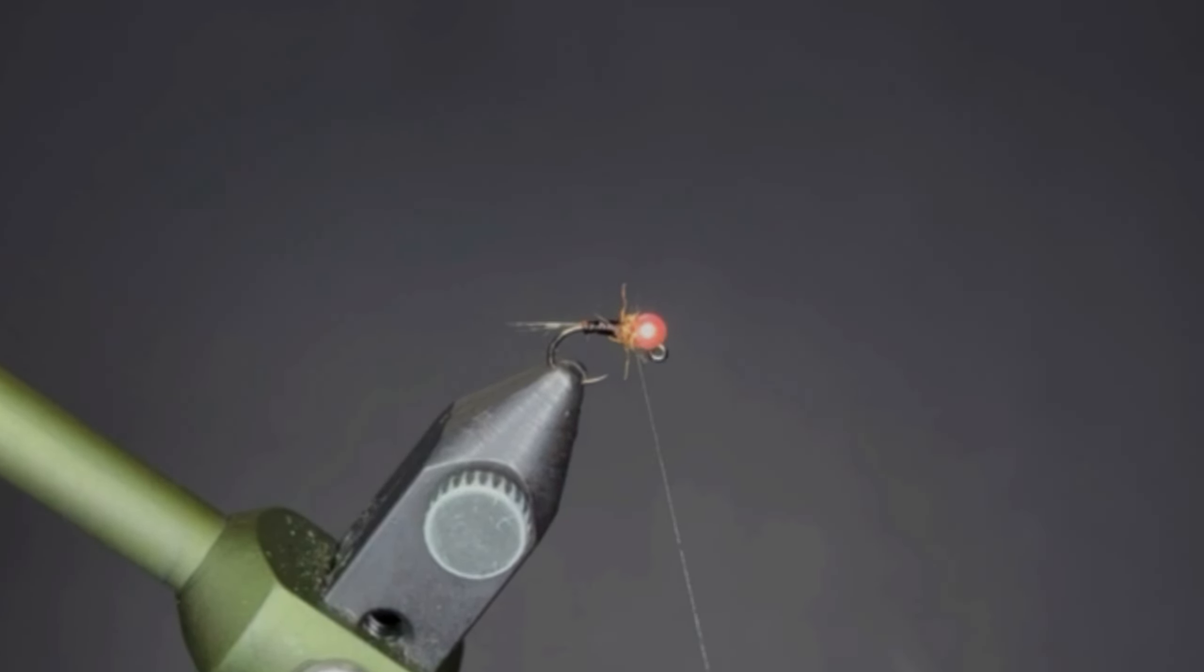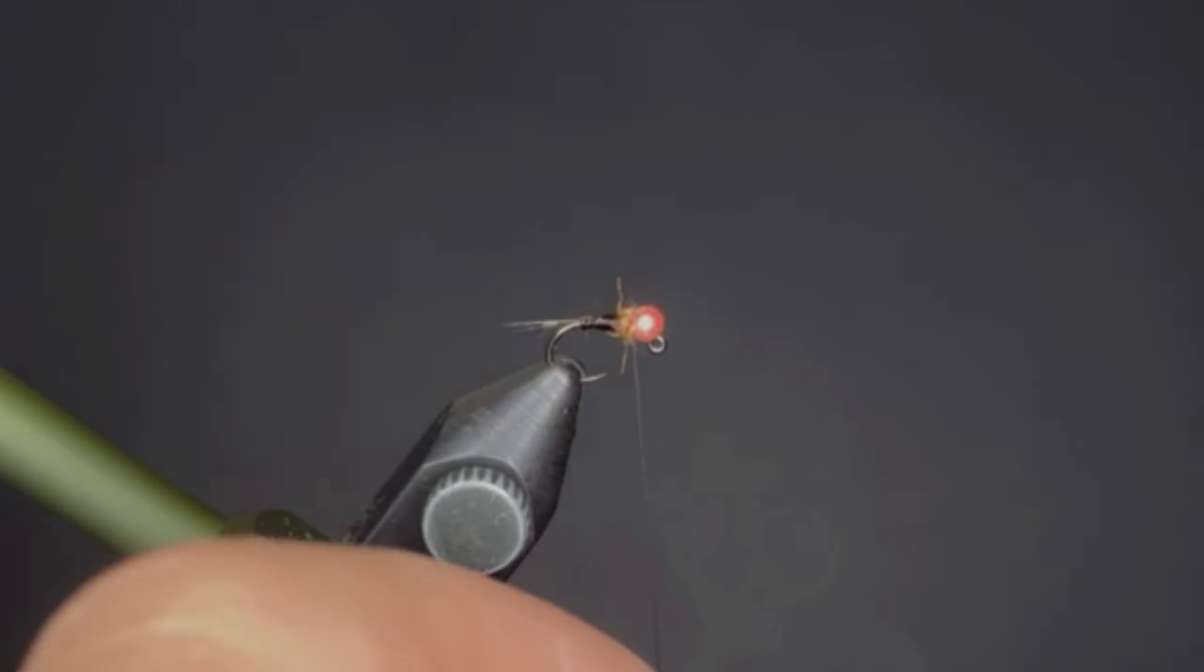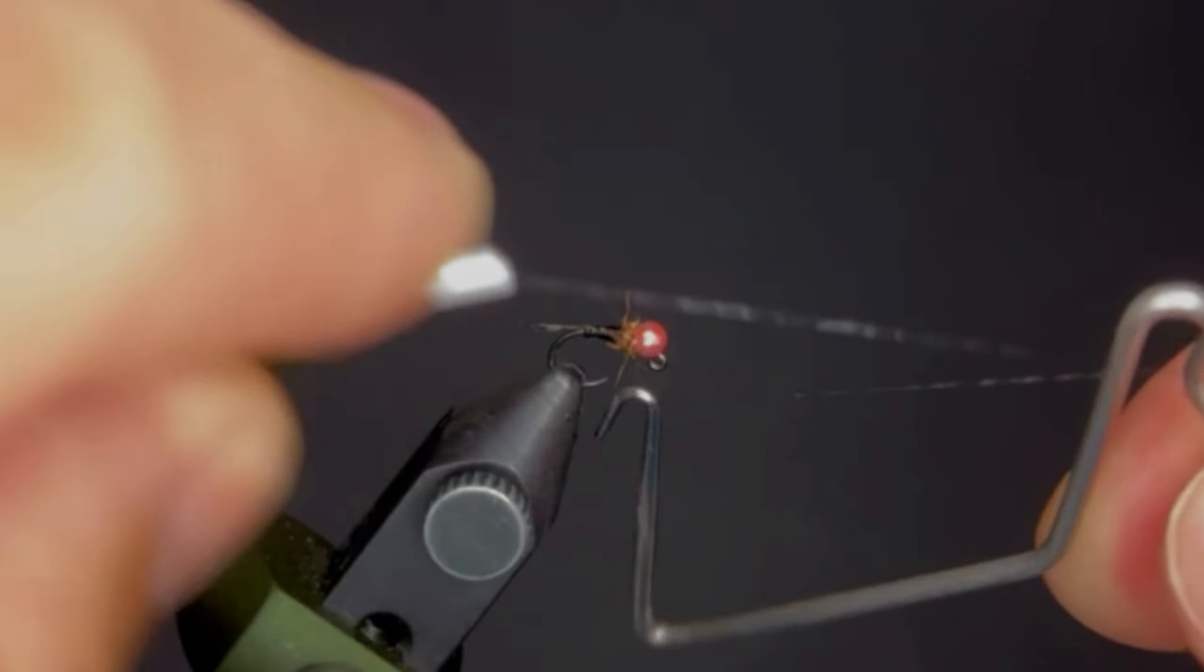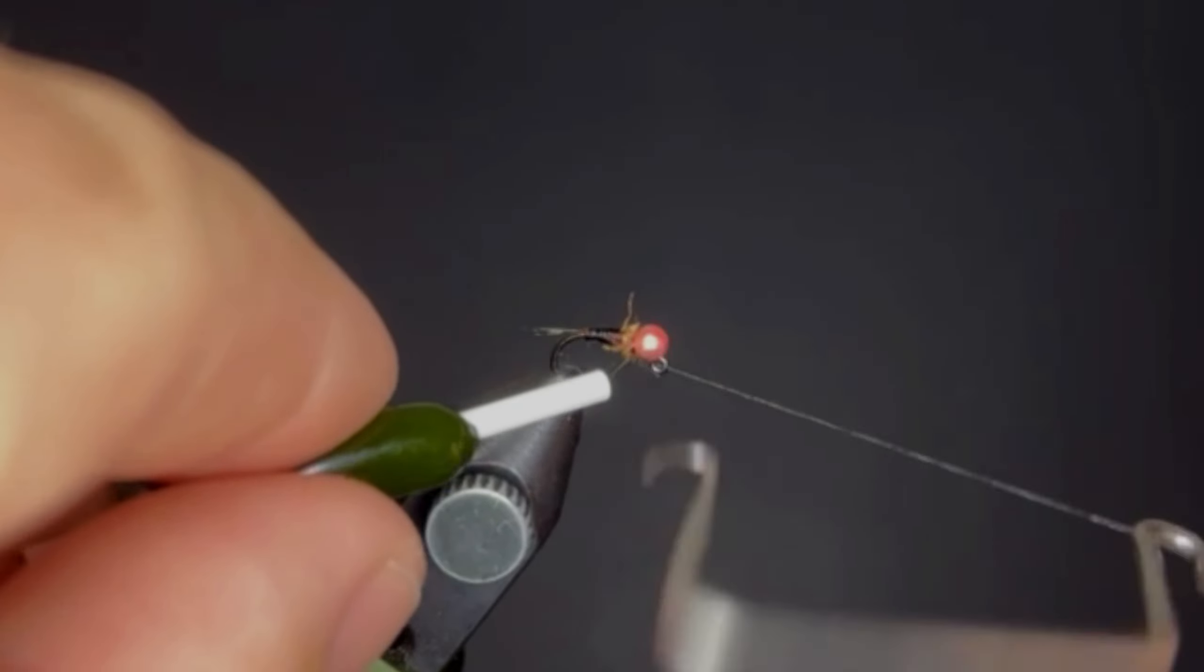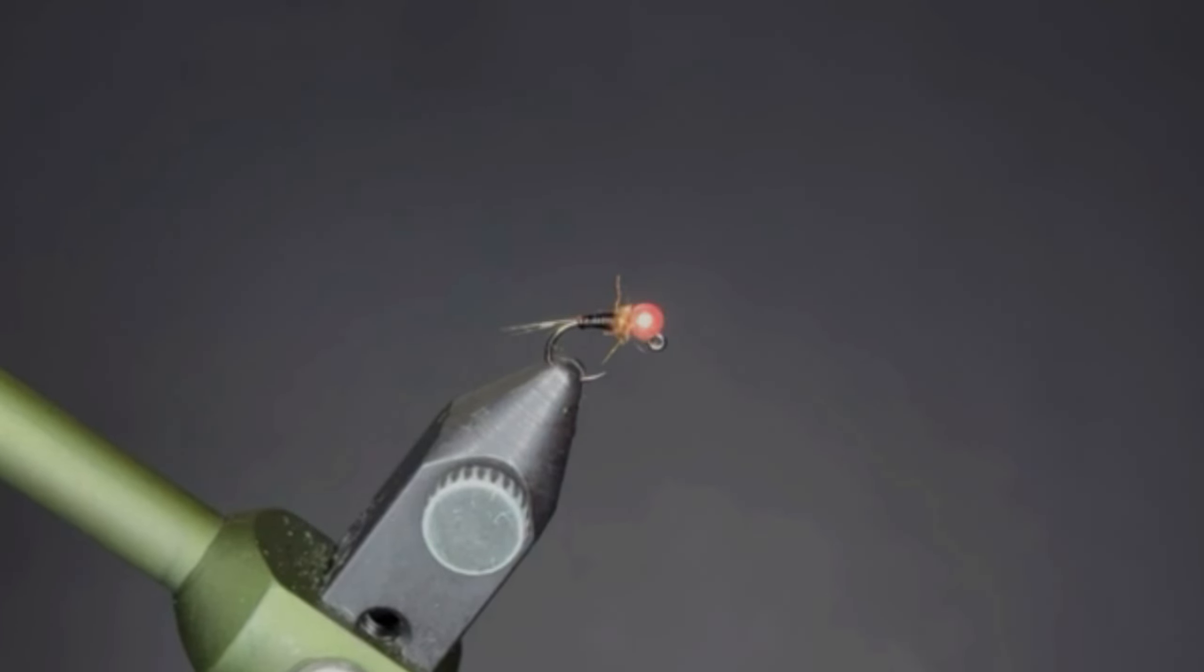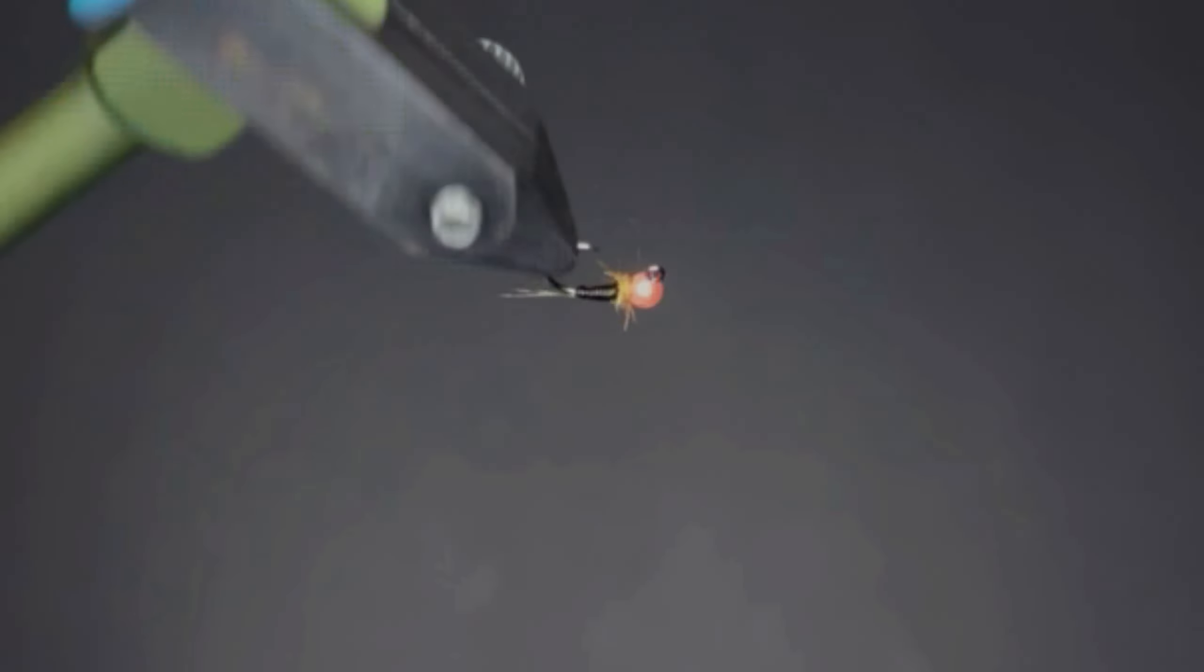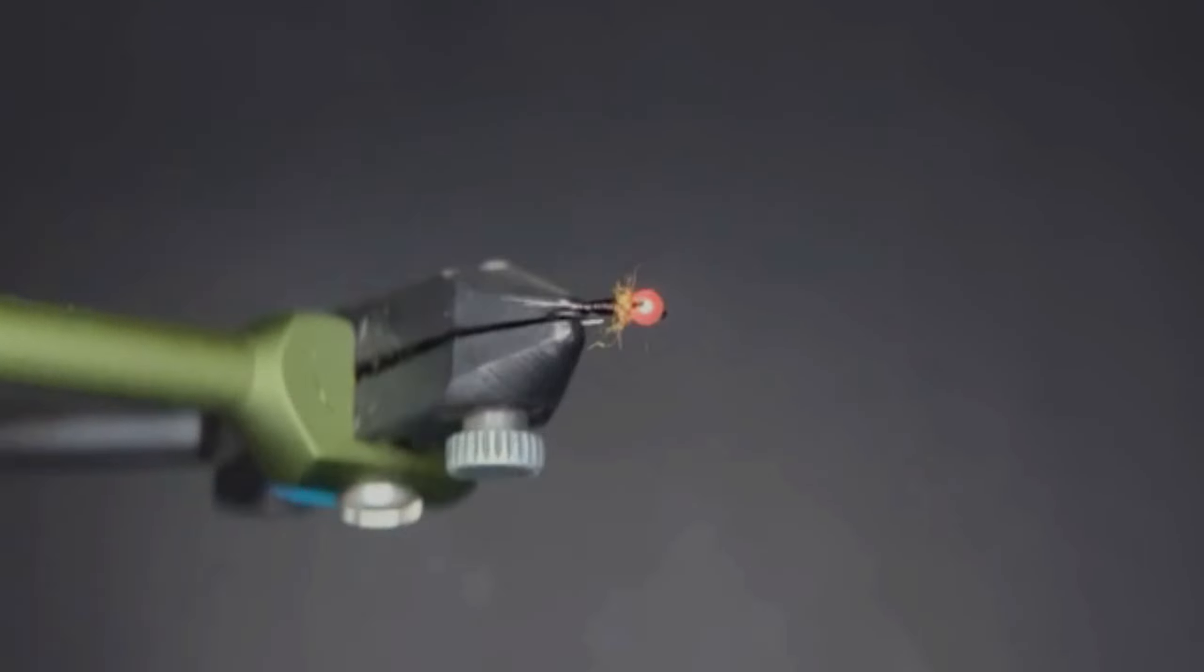Do a couple cross wraps to lock that into place, then come in with our whip finish tool and do a four or five turn whip finish. Cut your thread off and there you have it - that is the France fly, a style of nymph with this micro stretch tubing.